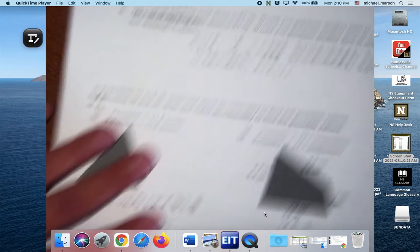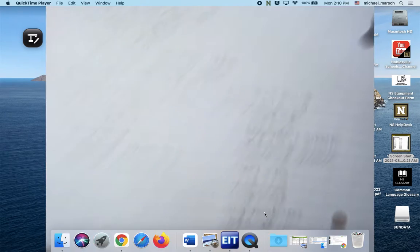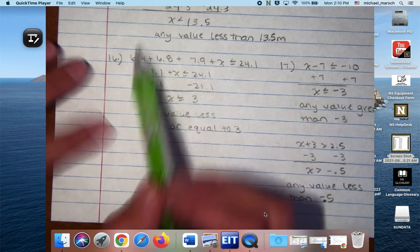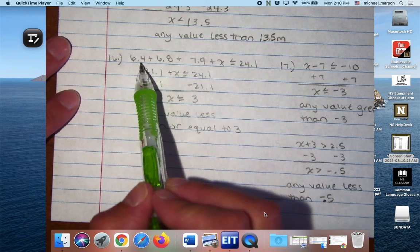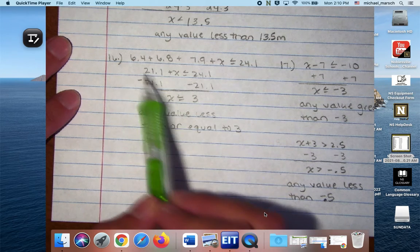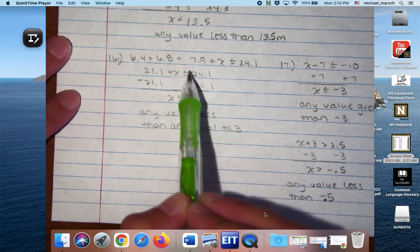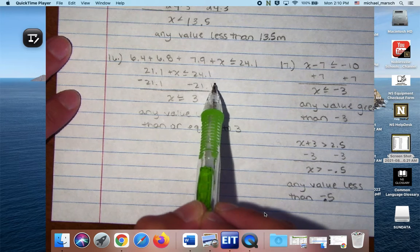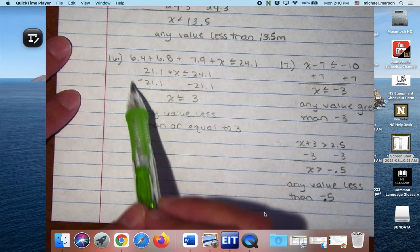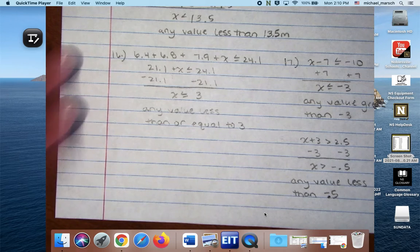So I have it here on a separate piece of paper because I was worried that I'm going to run out of room. So I combined all of these, the 6.4, 6.8, 7.9, and I got 21.1 plus X is less than or equal to 24.1. Yeah, I did 6.4 plus 6.4 and not plus 6.8. Oh, there we go. Okay, perfect.